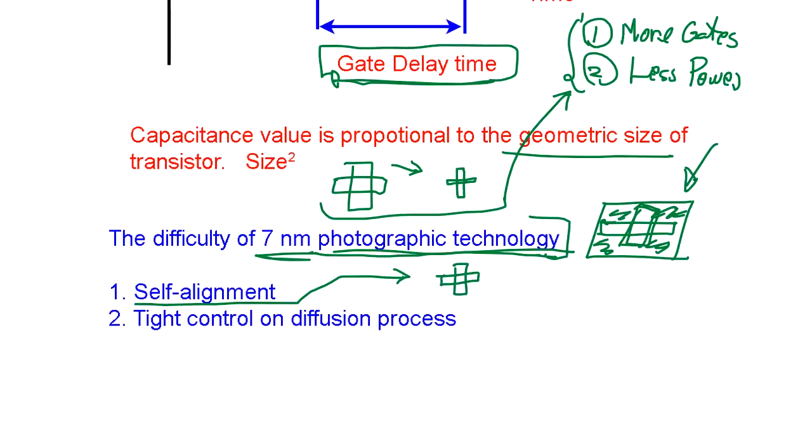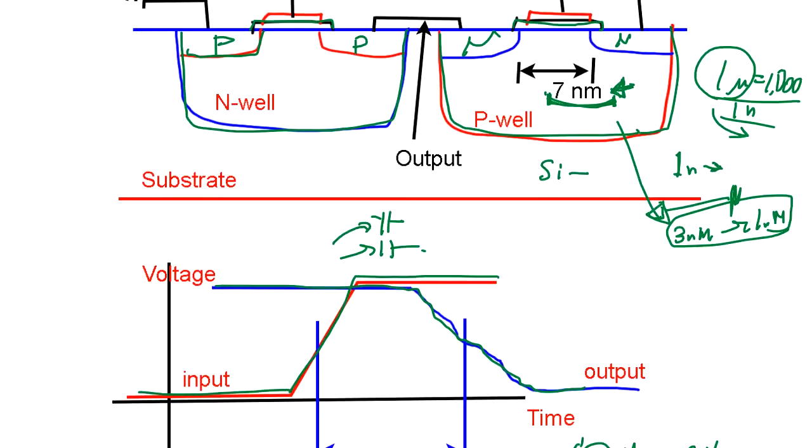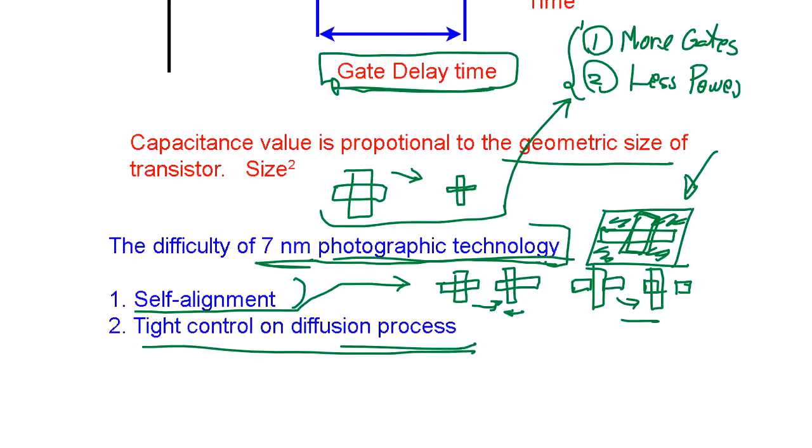For example, divide this into two this way, or this way versus you make it this way and align or misalign. This is all technology. Self-alignment is like even if you have a slightly off position, it still works. That's self-alignment. And tight control on diffusion process: diffusion is how you diffuse the impurity into the silicon to make N-type and P-type. That's tight control on diffusion process, that's the technology.